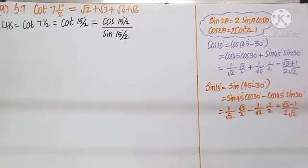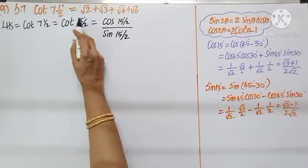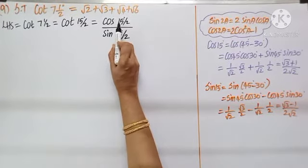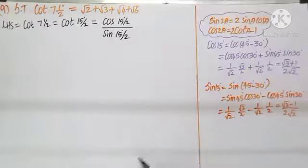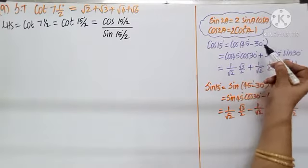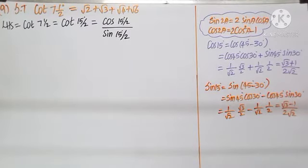Question number 9: show that cot(7½°) equals √2 plus √3 plus √4 plus √6. The LHS has cot, but we know formulas for sin, cos, tan. So write cot(7½°) as cos(15°/2) by sin(15°/2). Recalling cos 15° and sin 15° from the previous exercise: 15° is 45° minus 30°, so cos 15° equals cos 45° cos 30° plus sin 45° sin 30°, giving (√3 plus 1) by 2√2.